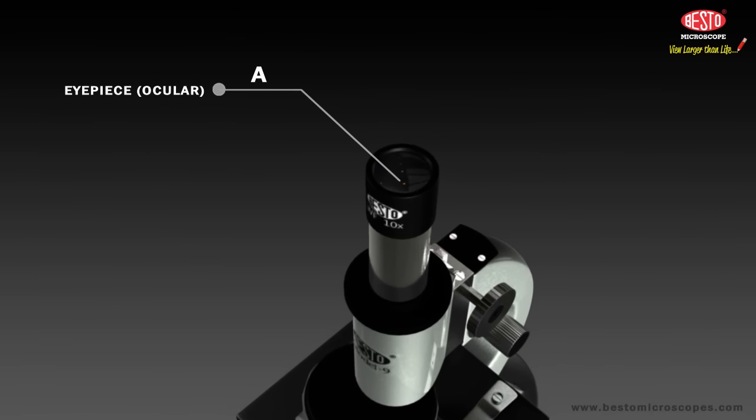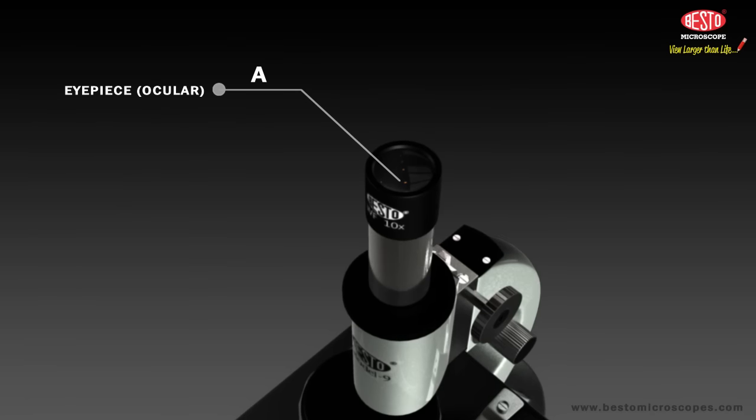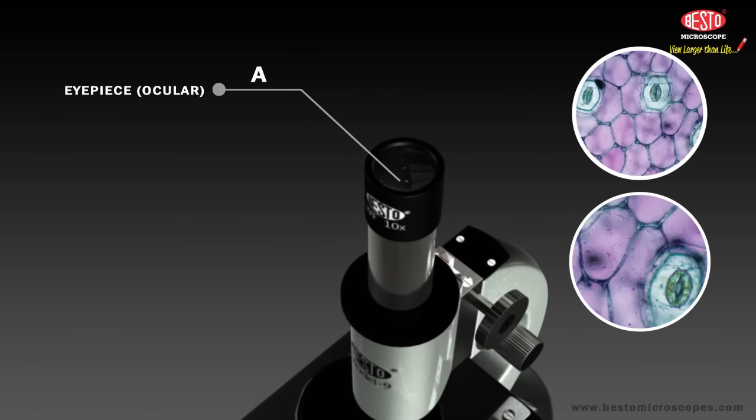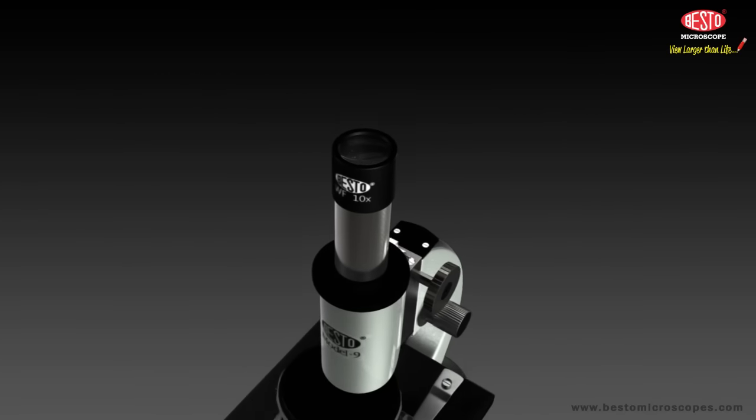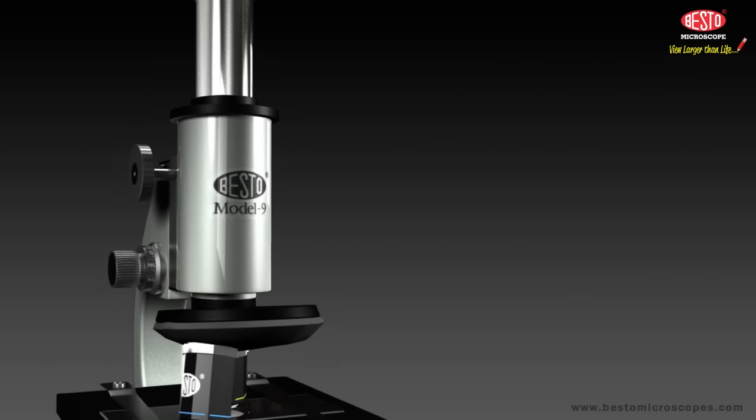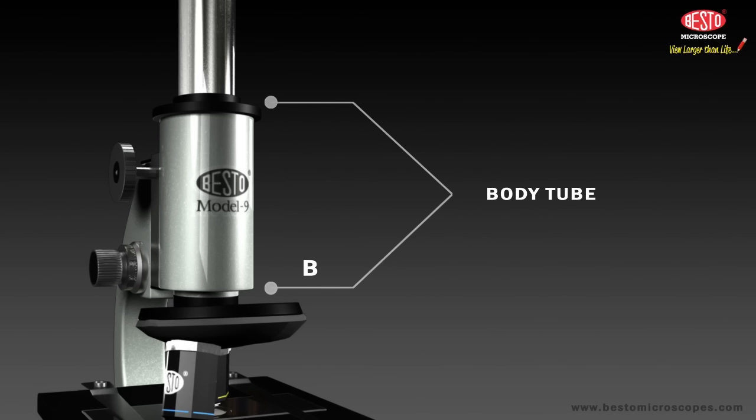An eyepiece may be labeled with its magnification power, for example 5x or 10x, meaning it enlarges 5 times or 10 times. B. The body tube holds the eyepiece in position over the revolving nosepiece and the objectives. The body tube may be straight up and down or slanted.